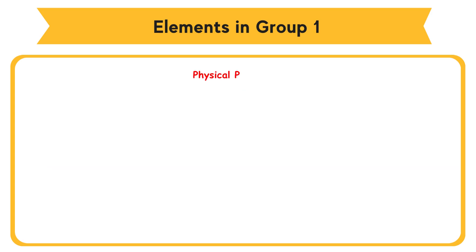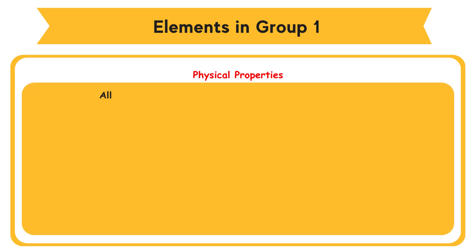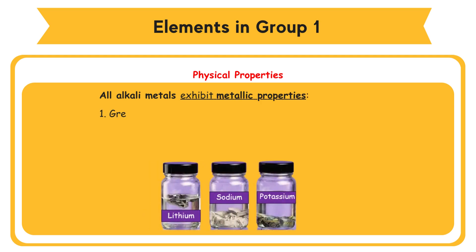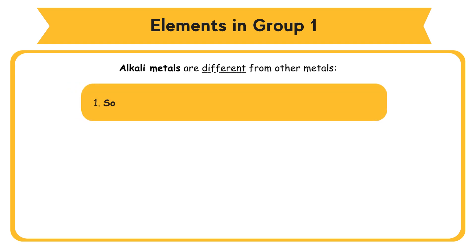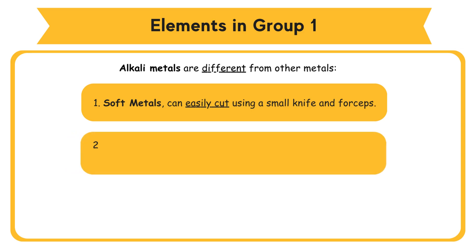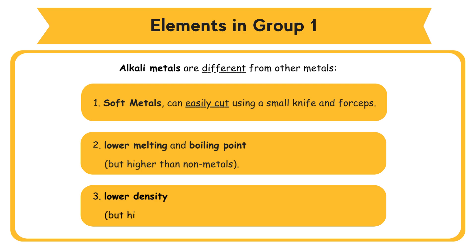Physical properties of alkali metals: all alkali metals exhibit metallic properties — they are grey solids with a shiny surface, conduct heat, and conduct electricity. Alkali metals are different from other metals because they are soft metals; you can easily cut alkali metals using a small knife and forceps. They have lower melting and boiling points, but higher than non-metals, and lower density but higher than non-metals.